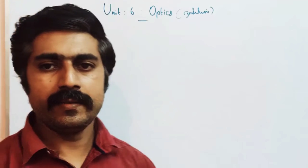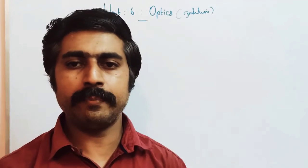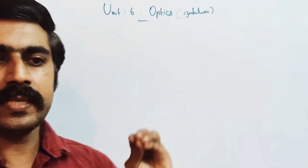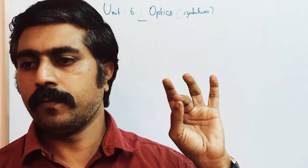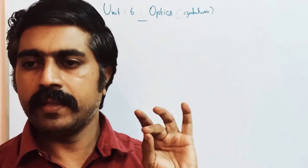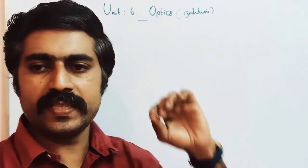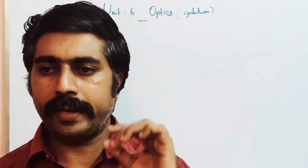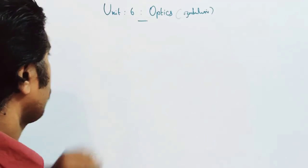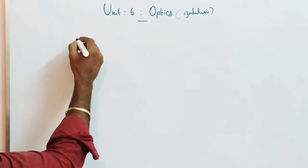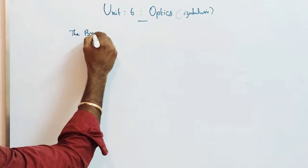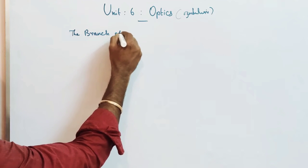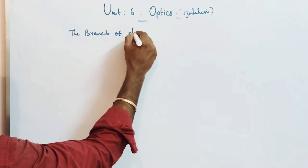Optics — what is it? So this is a branch of physics. Why is there a science branch? Physics, Chemistry, Biology. Optics is the physics branch topic. Optics is the branch of physics.